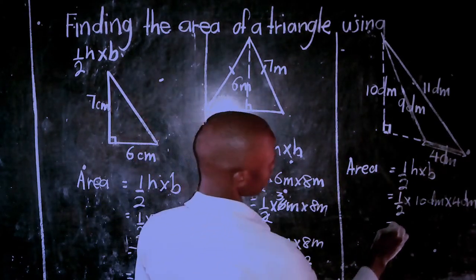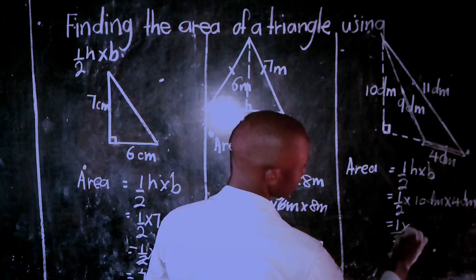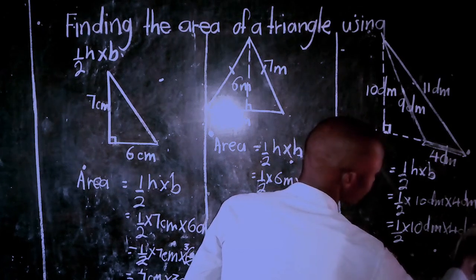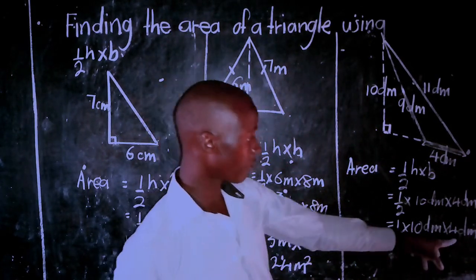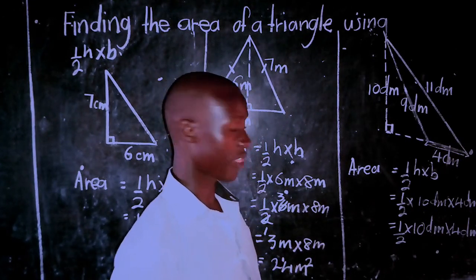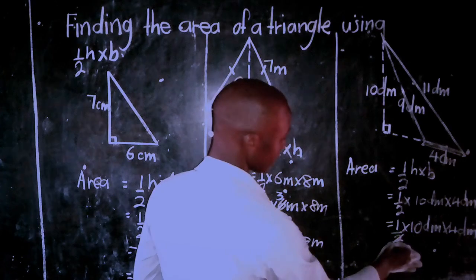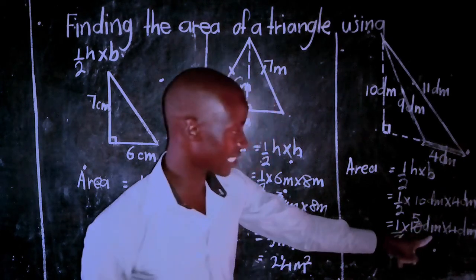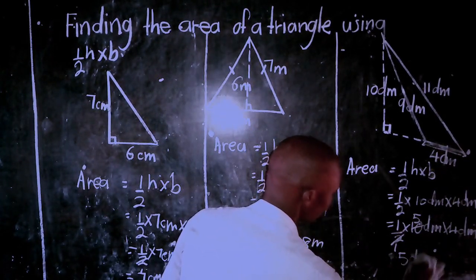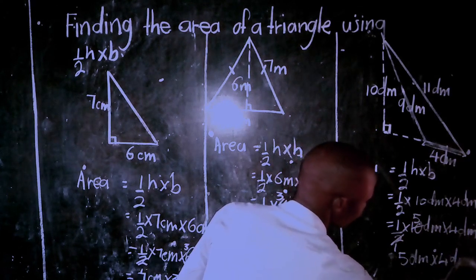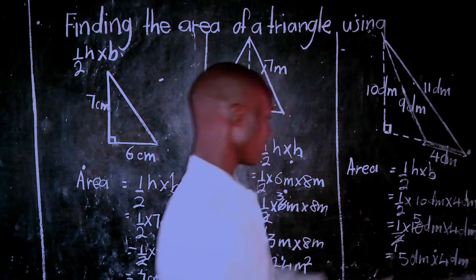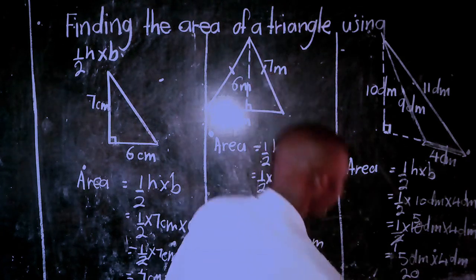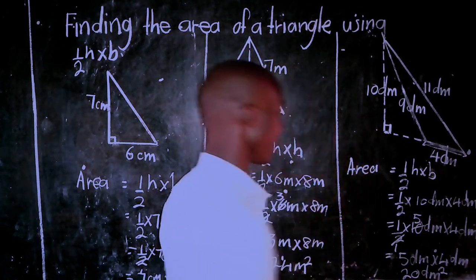The second step is to solve or cancel out mathematically. I have a half times 10 decimeters times 4 decimeters. Both 10 and 4 can be divided by 2. So 2 divided by 2 is 1, and 10 divided by 2 is 5. This gives me 5 decimeters times 4 decimeters. What is 5 times 4? It is 20. So the area is 20 decimeters squared. And that's my answer.